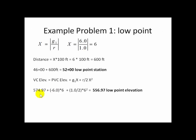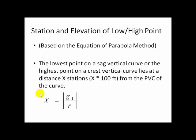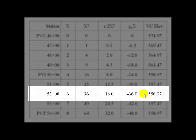So, in this case, for example, problem one. G1 has a value of 6. R has a value of 1, giving us a result of 6 for X. Well, that's 6 stations or 600 feet. We add that 600 feet to our PVC station, and we come up with 52 plus 00. This is one of the stations that we saw in our data just a few moments ago. 556.97 occurred at 52 plus 00.